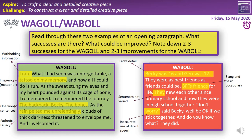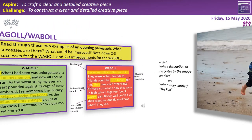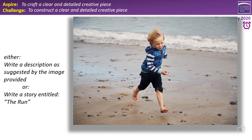For your KIP today, you have a choice of task: write a description or write a narrative — completely up to you. Remember, the skills are interchangeable. If you choose the descriptive piece, you'll write a description suggested by the image on screen — a beach with a young boy running. You can print it out if possible, but remember you're just being inspired by it: you can add or remove details, change the weather or time of day.